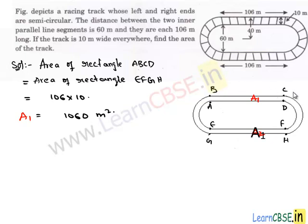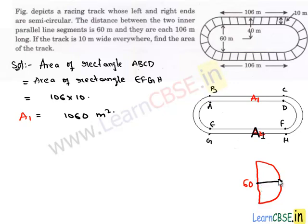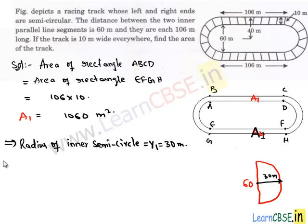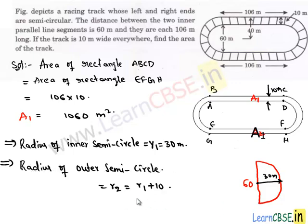Now we have two semicircles. This is the inner semicircle, and given that the distance between these two lines is 60 meters, the diameter of the inner circle becomes 60 meters. So its radius R1 becomes 30 meters. Similarly, we have to find the radius of the outer circle. The width of the track is 10 meters, so by adding 10 meters to the radius of the inner semicircle, we get the radius of the outer semicircle. Let it be R2, and R2 equals 30 plus 10, which is 40 meters.